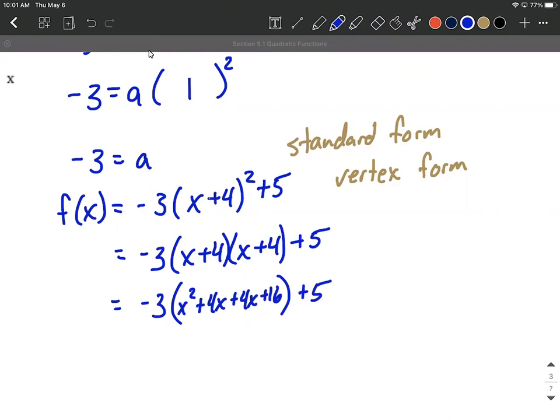Now go ahead and distribute the -3. We could combine those like terms first, but I'm electing to go ahead and distribute first. -3x², -12x, -12x, -48, and then bring down the +5.